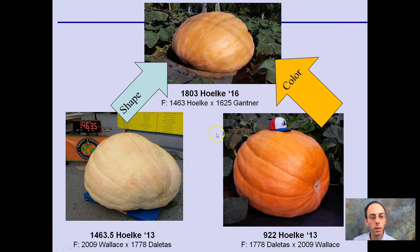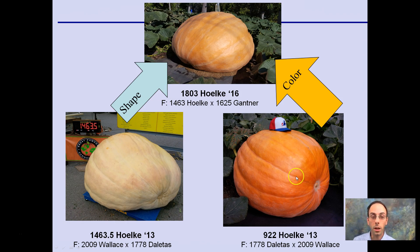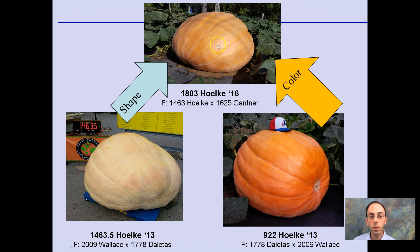The reason I chose giant pumpkins gives you a little visual here. Here's a resulting pumpkin, here's the seed that pumpkin came from, and here's the pollinator. You can see with pumpkins you kind of get a blending sometimes — this pumpkin took on the shape of its mother a little bit more and the color from the pollinator, or its father. So you get this mixture of shape from one and color from another.